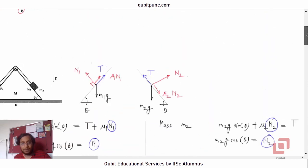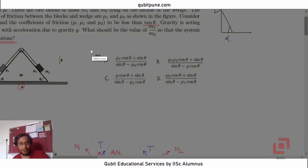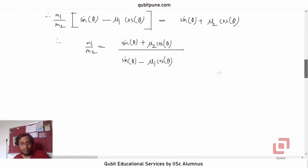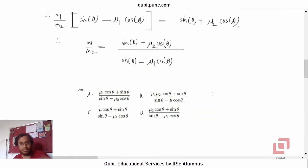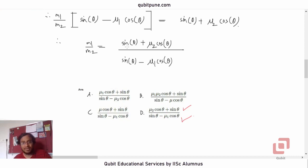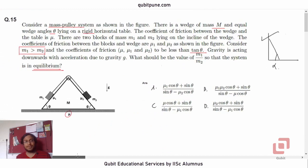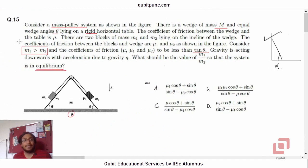Do we have that in our options? Yes — we have sin theta + mu2 cos theta in the numerator and sin theta − mu1 cos theta in the denominator. So the correct option is that expression. That completes our discussion of all MCQs from SRF T2 test 2020 Physics.